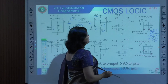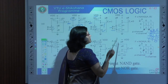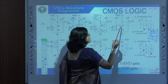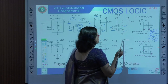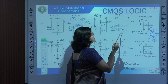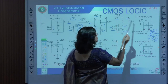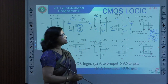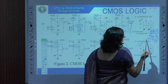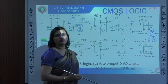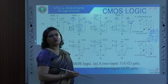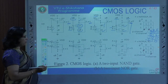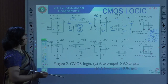For the last case, when A is 1 and B is 1: both series NMOS transistors are turned on, both switches are closed, while both PMOS transistors are turned off. The output F is pulled down to 0 volts. So when A equals 1 and B equals 1, output F equals 0.